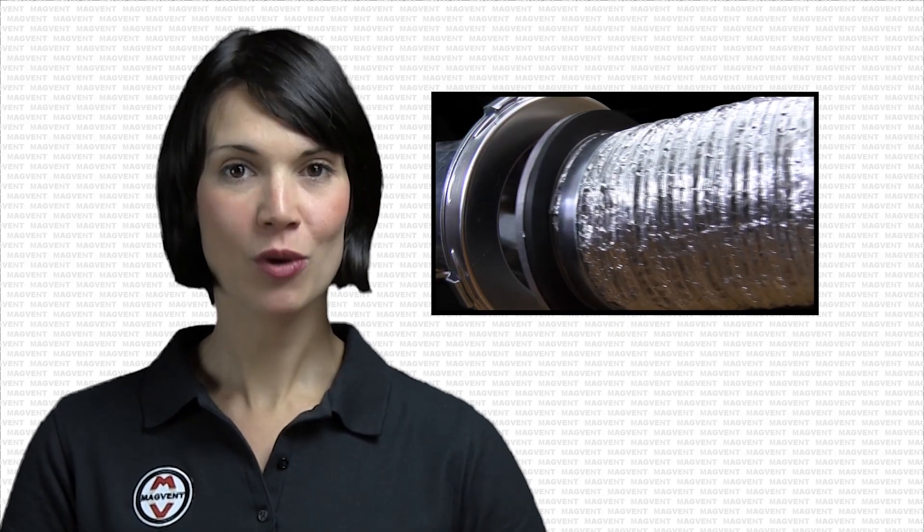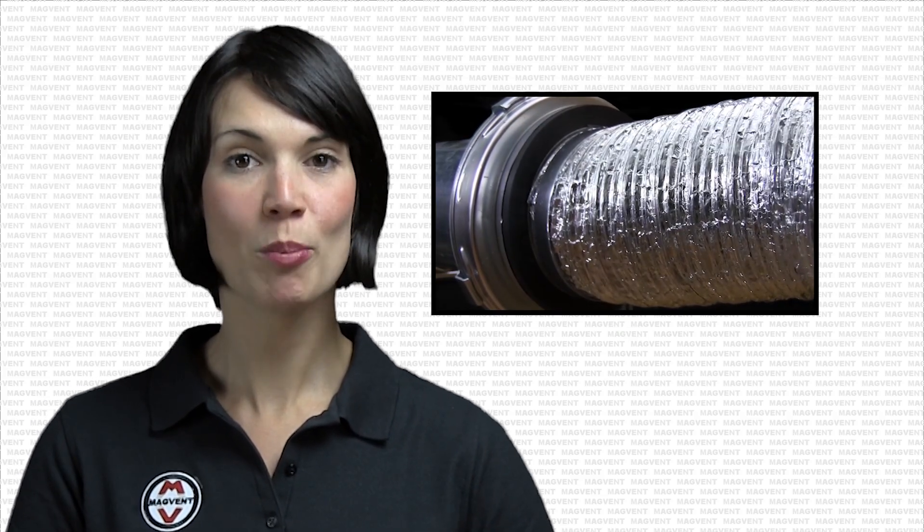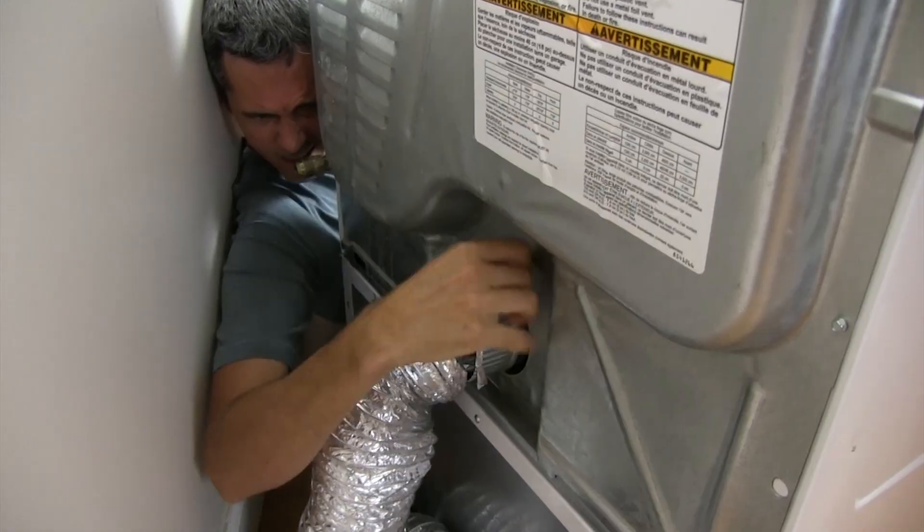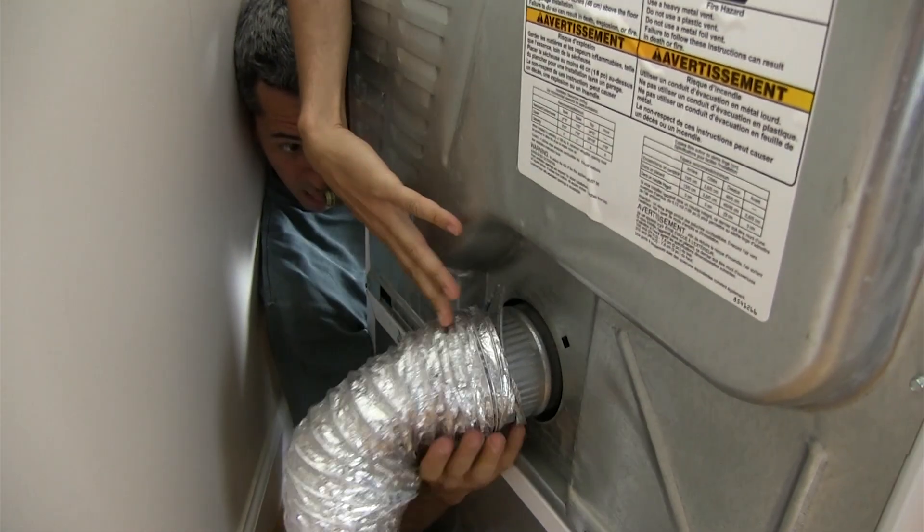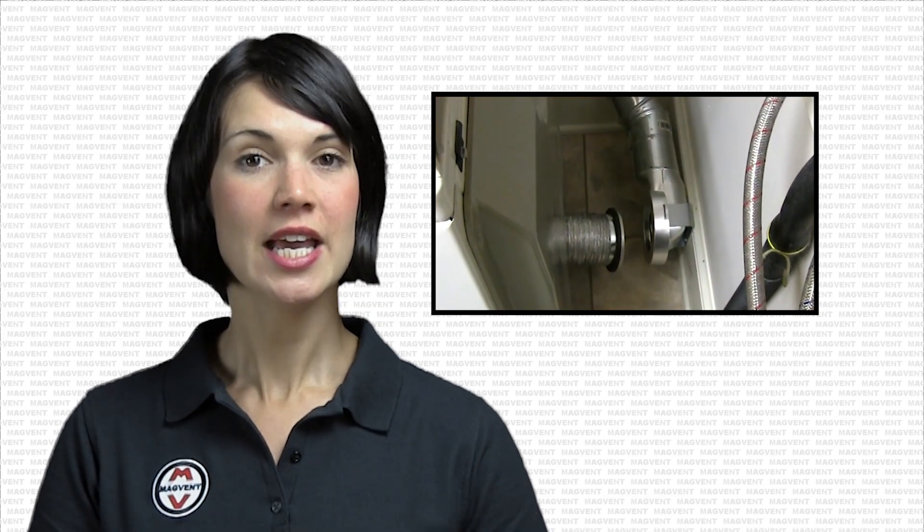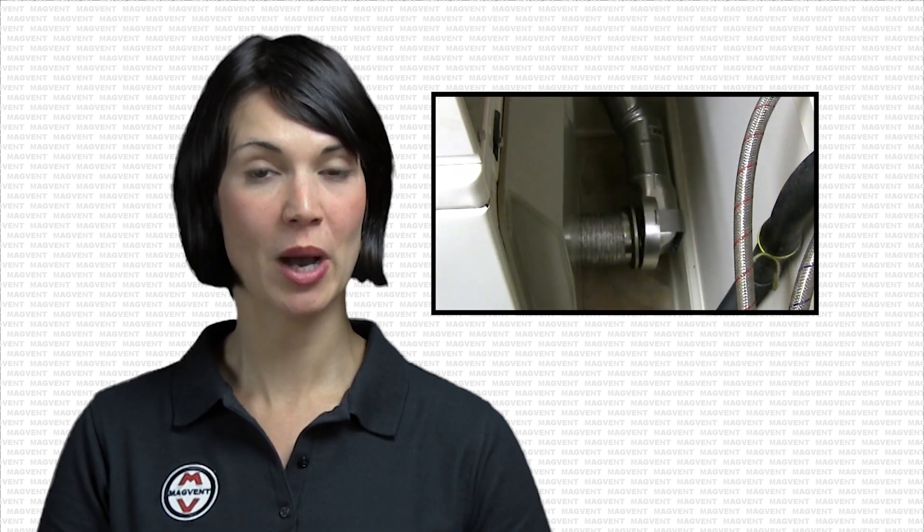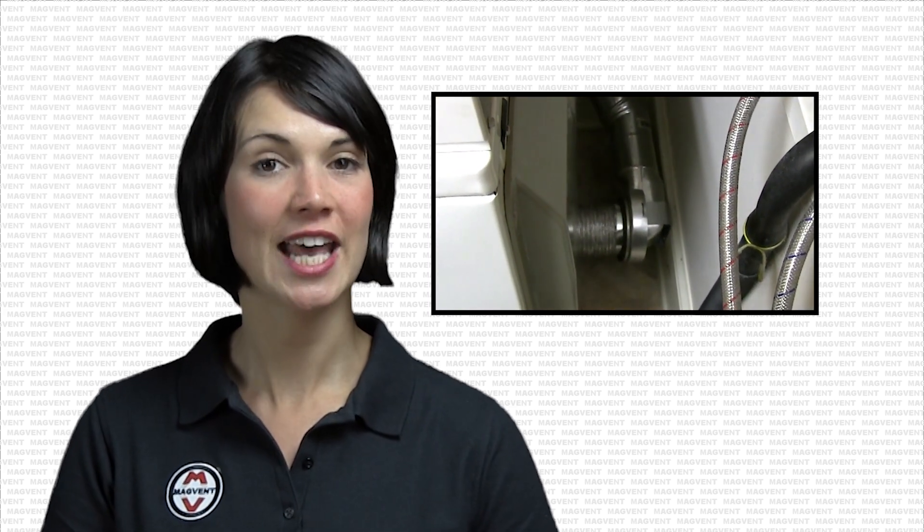MagVent uses powerful ring magnet technology to remotely seal the duct path so you no longer have to get behind the dryer. This eliminates the need for excessive transition duct length, giving you a minimum vent path installation that you can feel good about because it is safe, efficient, and looks professional.